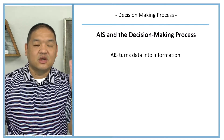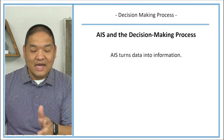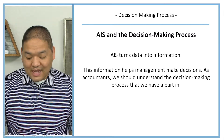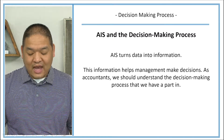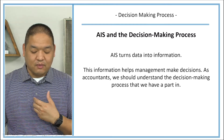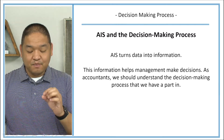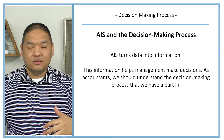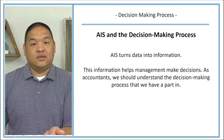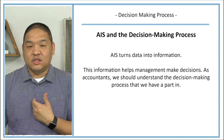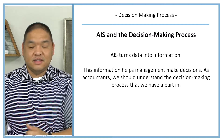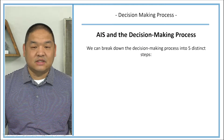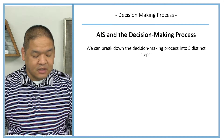Accounting information systems turns data into information. This information helps management make decisions. As accountants, we should understand the decision making process that we have a part in — we should understand what they're going through based on the information that we give to them. We can break down the decision making process into five distinct steps.